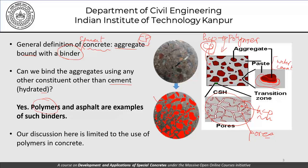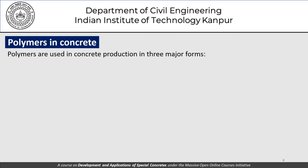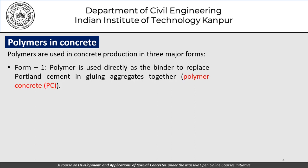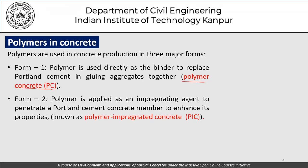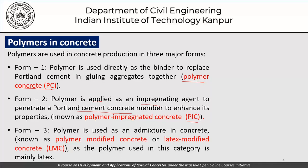Polymers in concrete come in three major forms. First is polymer concrete (PC), where polymers are used directly as a binder to completely replace Portland cement in gluing aggregates together. Second is polymer impregnated concrete (PIC), where the polymer is applied as an impregnating agent to penetrate a hardened Portland cement concrete to enhance its properties. Third is polymer modified concrete, also known as latex modified concrete (LMC), where the polymer — largely a latex — is used as an admixture in the concrete mixture.